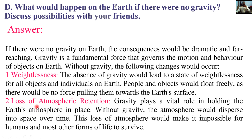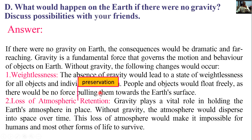Number two: loss of atmospheric retention — meaning preservation. Gravity plays a vital role in holding the Earth's atmosphere in place. Without gravity, the atmosphere would disperse into space over time. This loss of atmosphere would make it impossible for humans and most other forms of life to survive.